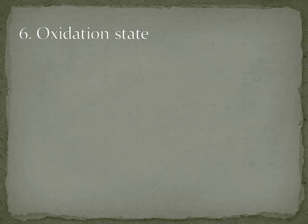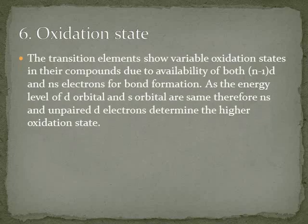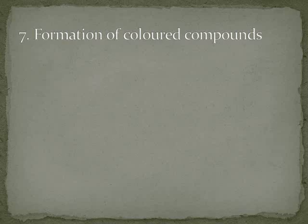Oxidation state — transition elements different oxidation states show karte hain. Reason yeh hai ki d aur s orbital ka energy level lagbhag same hota hai, isliye electrons S aur D kisi bhi orbital mein enter kar sakte hain. Isliye inki oxidation state variable hoti hai, aur inke paas unpaired electrons bahut zyada hote hain.